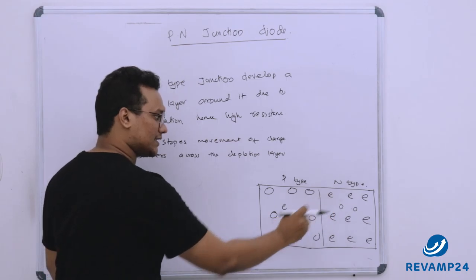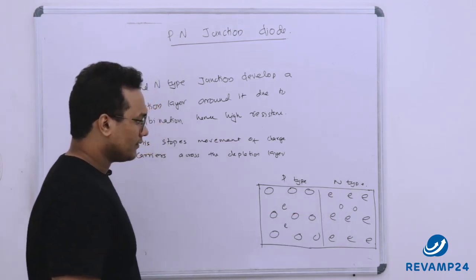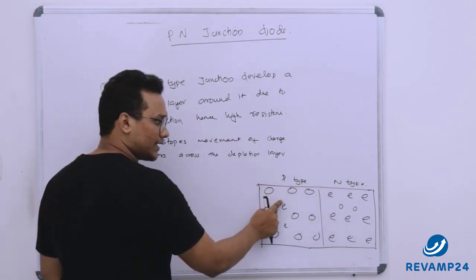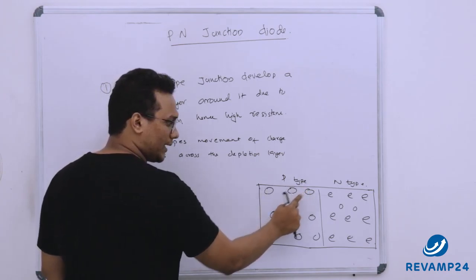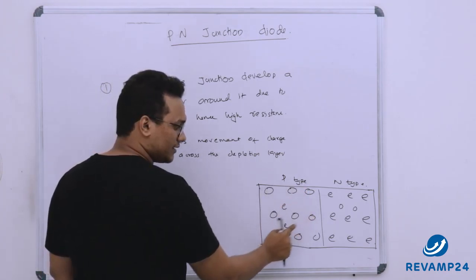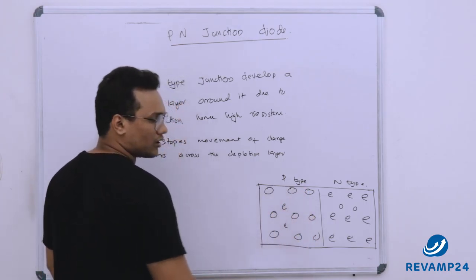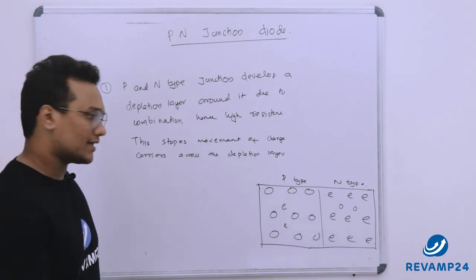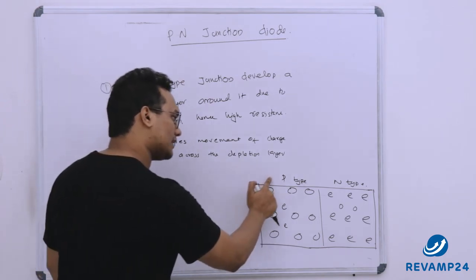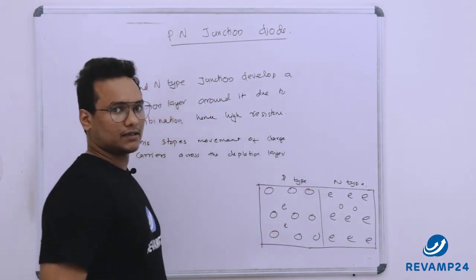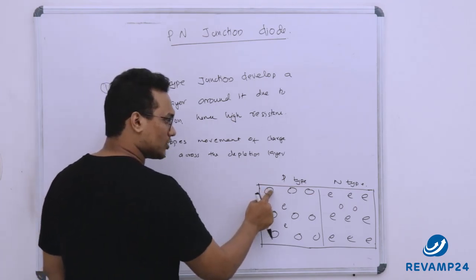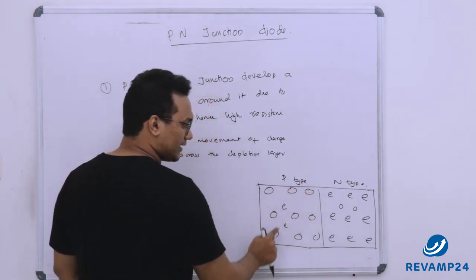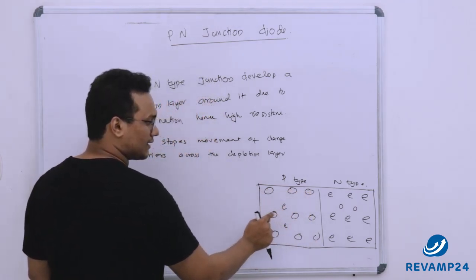When we connect them, we know that a P-type semiconductor has more number of holes compared to free electrons. That is the reason it is called P-type. The majority charge carriers are holes and the minority charge carriers are electrons.